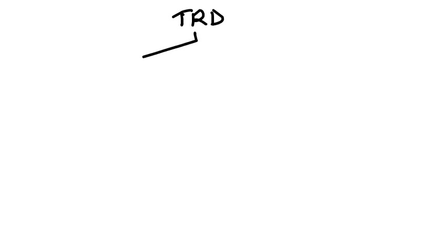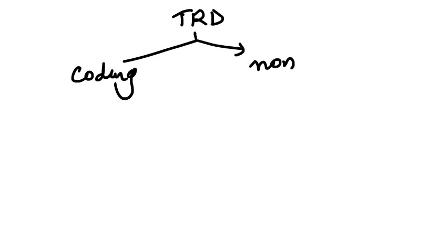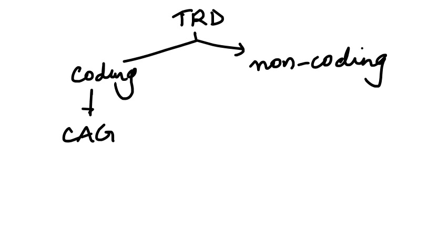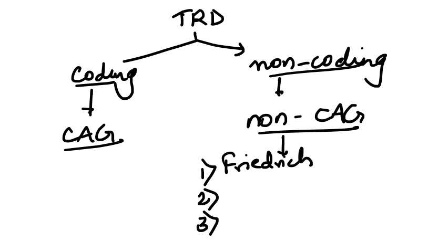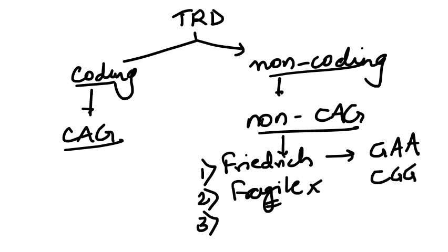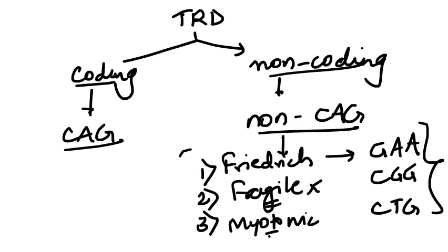Now, which trinucleotide repeat disorders affect the coding region and which affect the non-coding region? The CAG repeats affect the coding region, and the non-CAG repeats affect the non-coding region. The three non-CAG disorders are: Friedreich's ataxia (GAA), Fragile X syndrome (CGG), and myotonic dystrophy (CTG). These three involve non-coding regions. All CAG repeats involve the coding region.